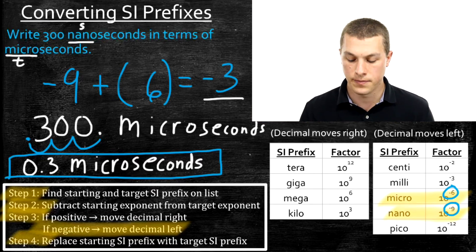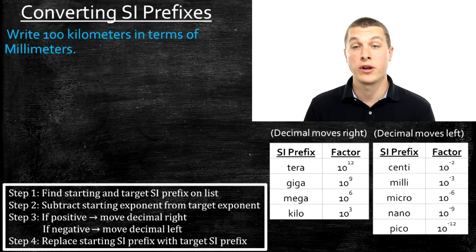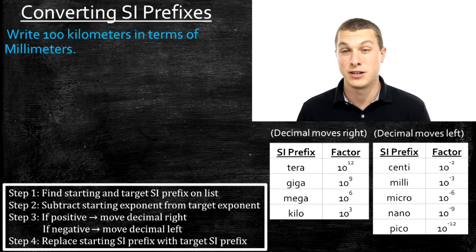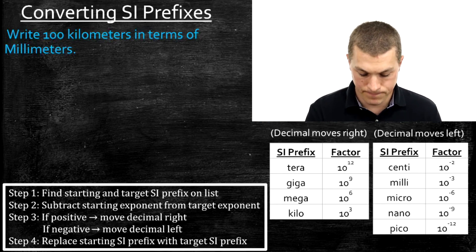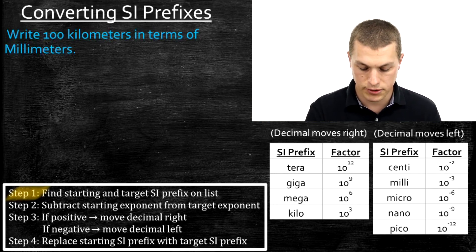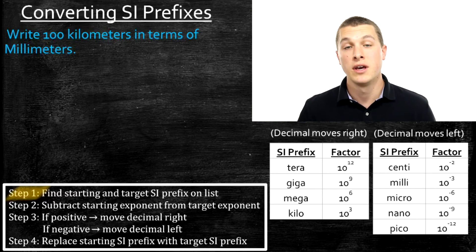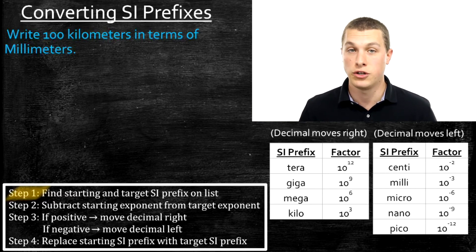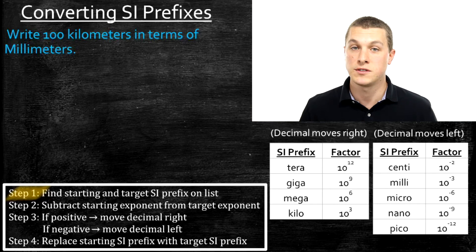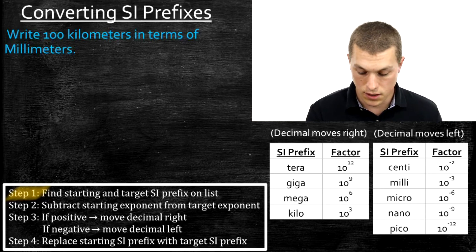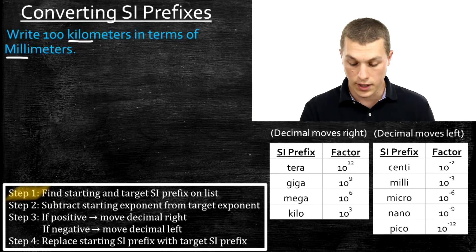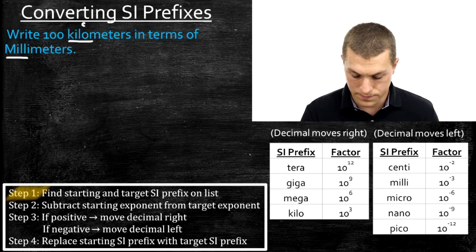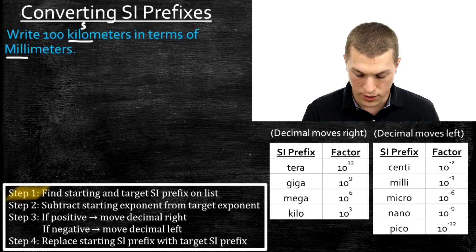One last example. Let's say we're going from 100 kilometers and want to write that in terms of millimeters. Step 1: find our starting and target SI prefixes. Now's a good time to pause the video, give this a try yourself, and then hit play to see if you're correct. Our starting SI prefix is kilo and our target SI prefix is milli.